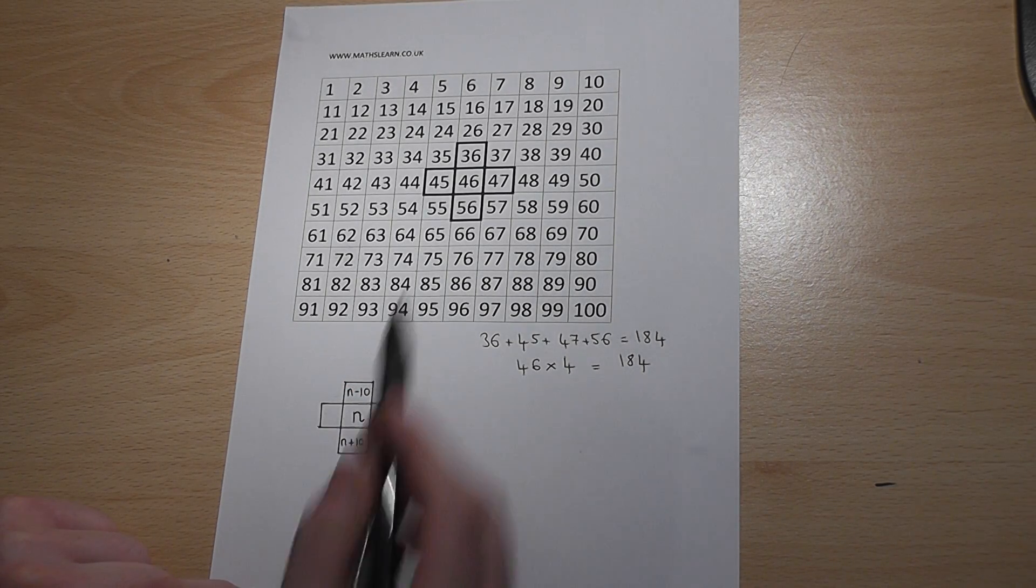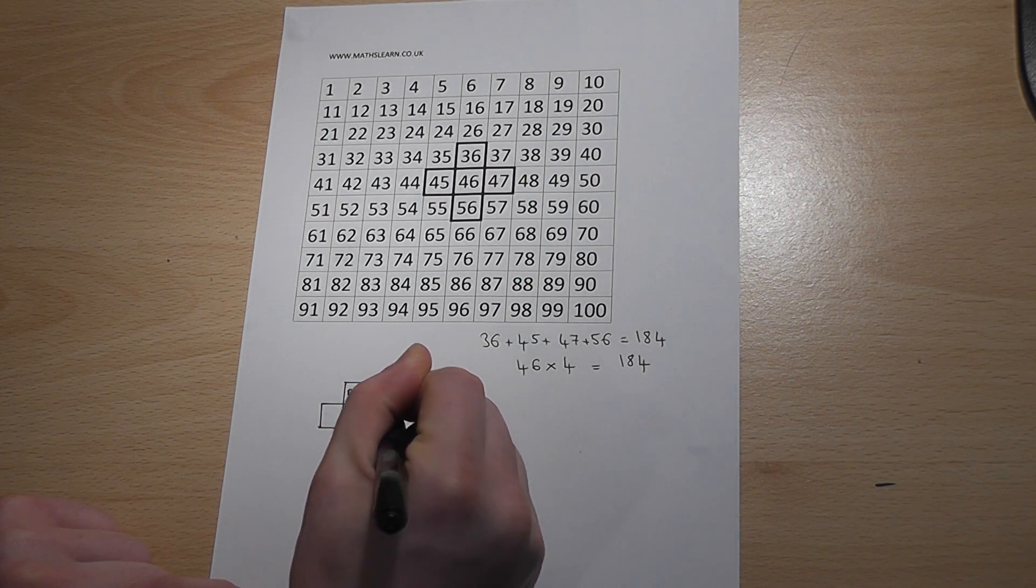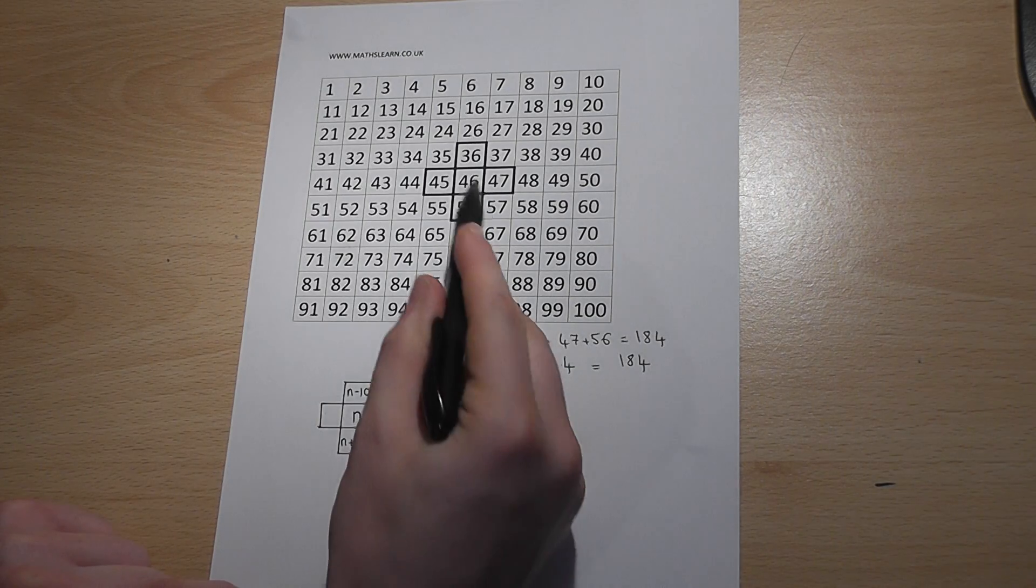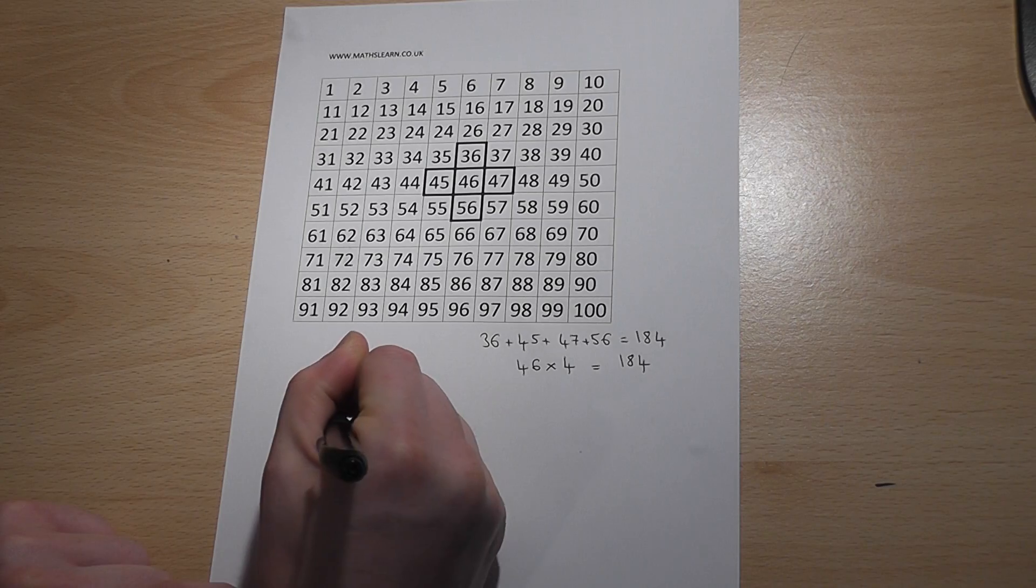The number to the right will always be one more, n plus 1, and the number to the left is always one less, that's n take 1.